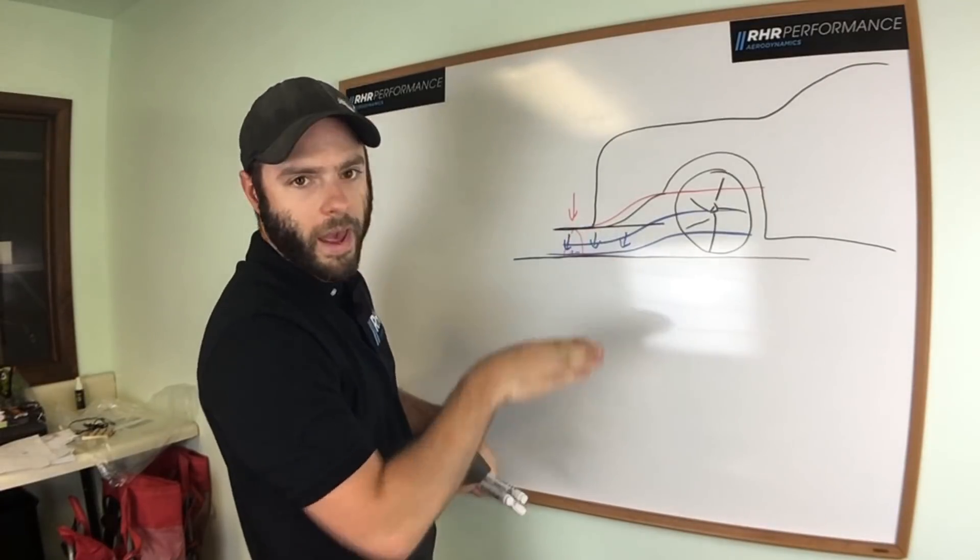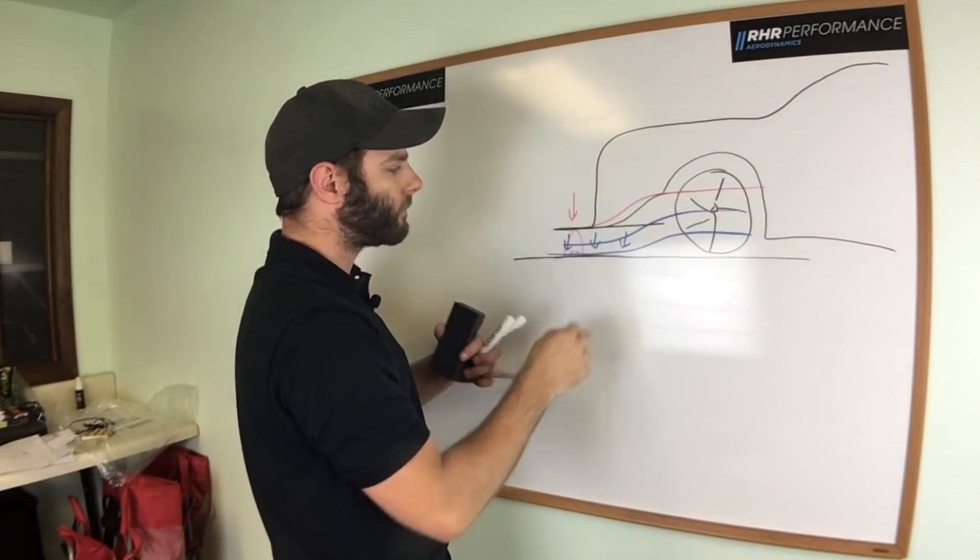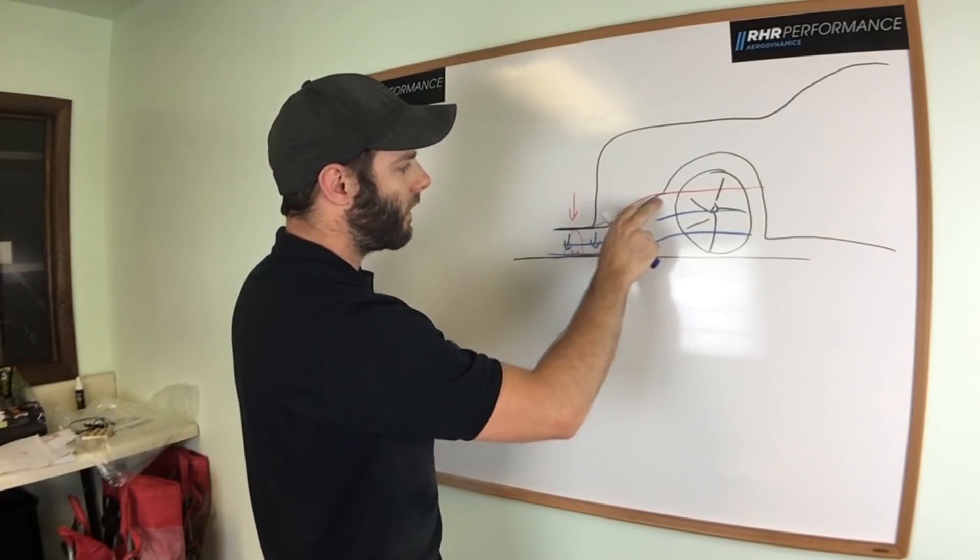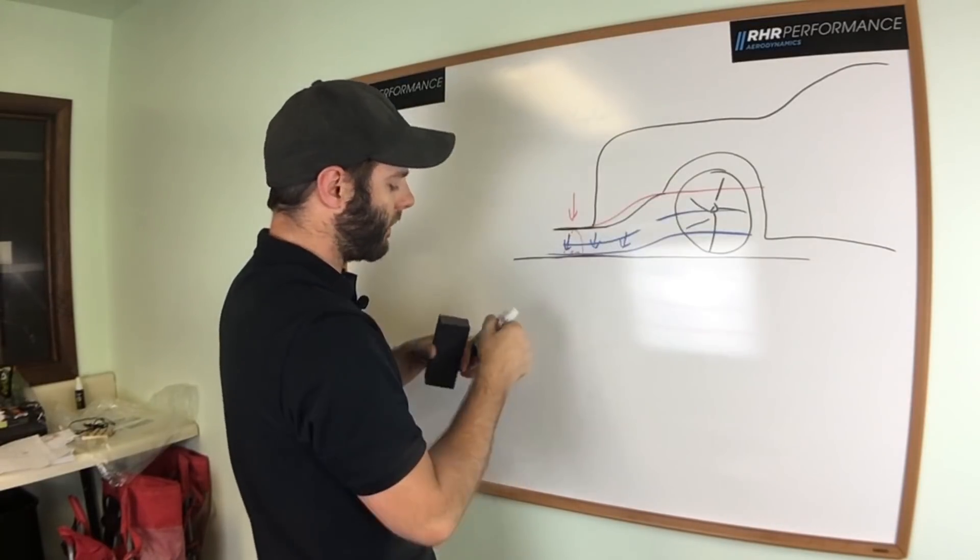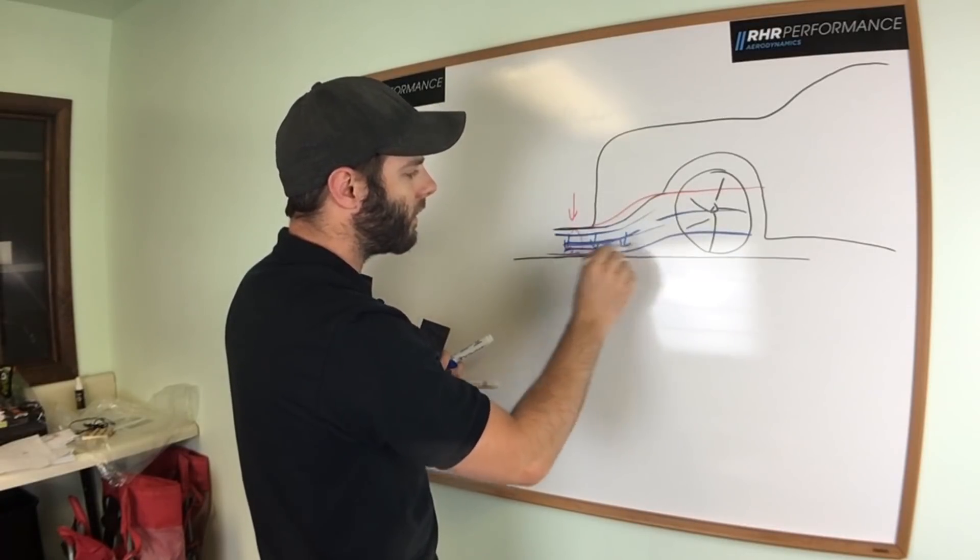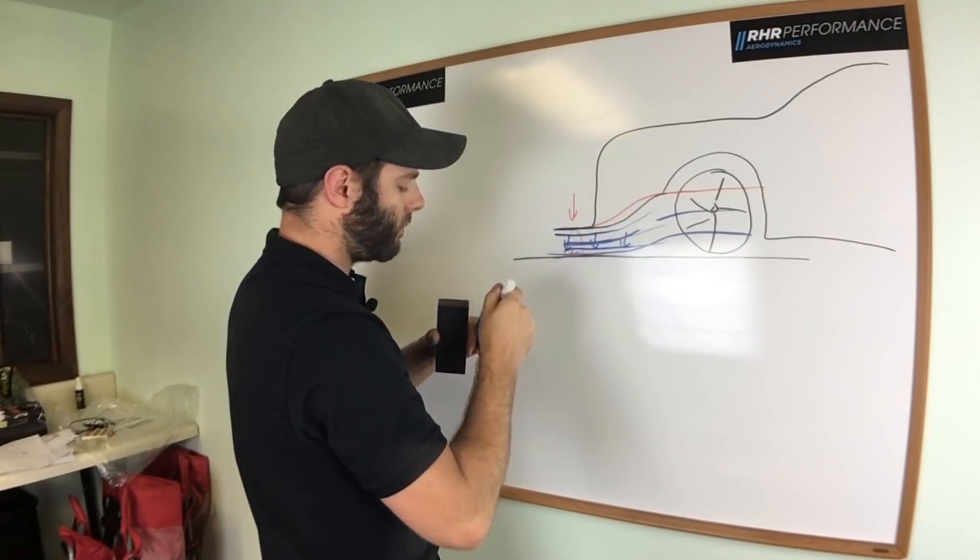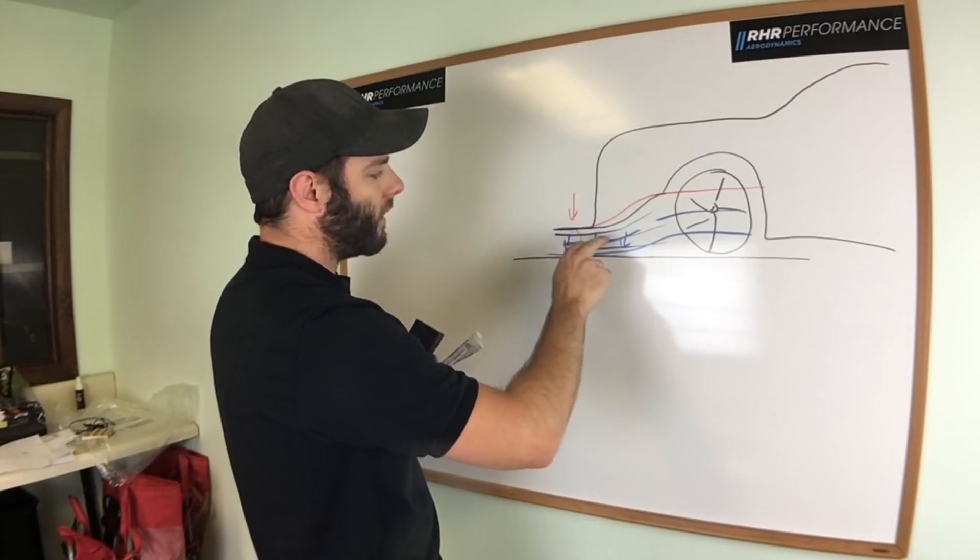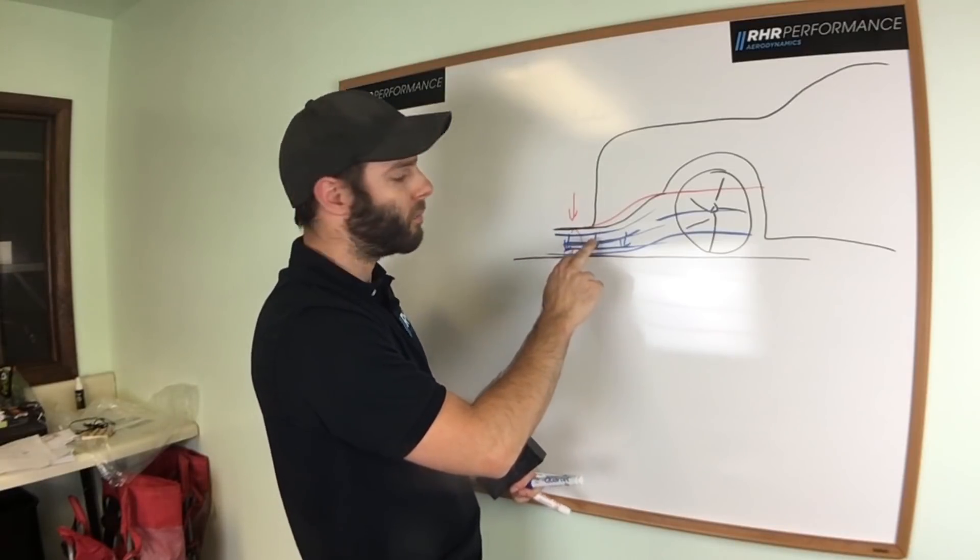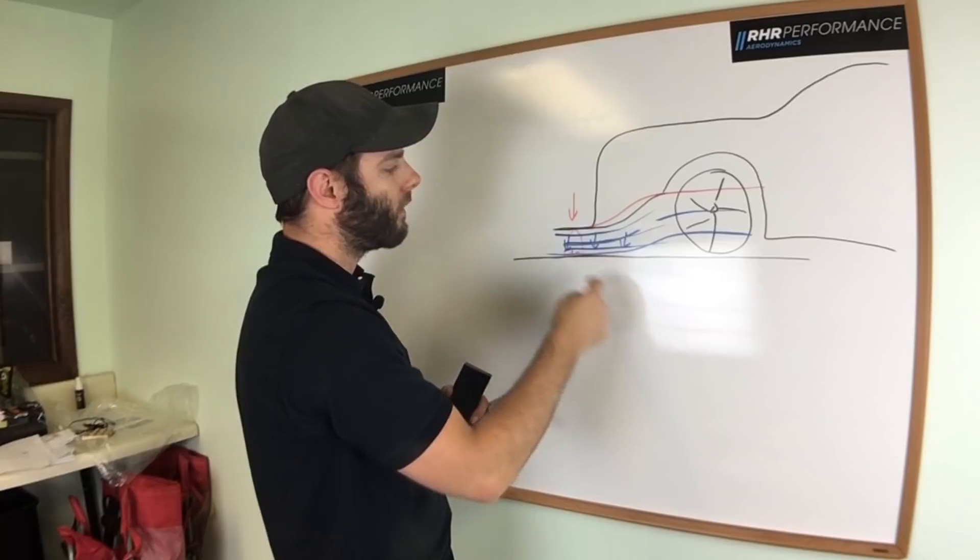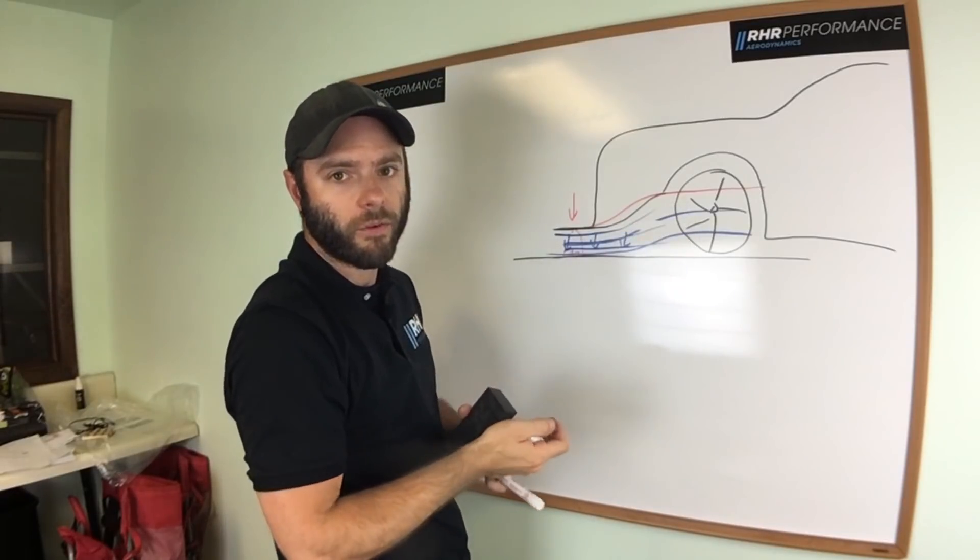But once you add a front diffuser, and you now all of a sudden have this extra volume under here, more air is going to want to get drawn up and in to this front splitter tunnel or front diffuser. What that does is speed up the air going underneath of the splitter, increasing the pressure drop, creating the extra downforce.